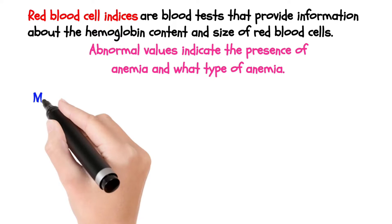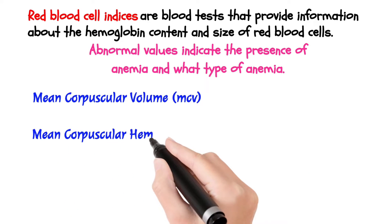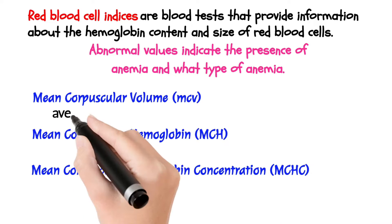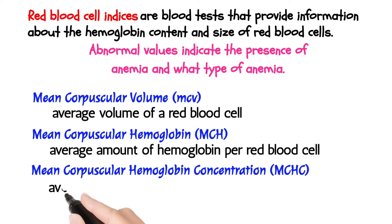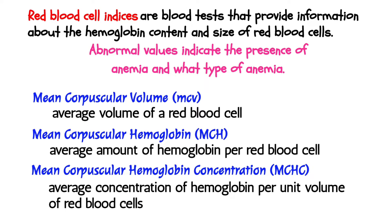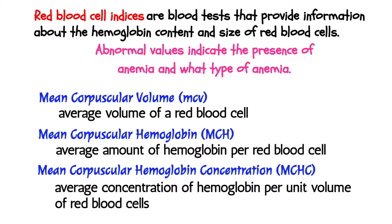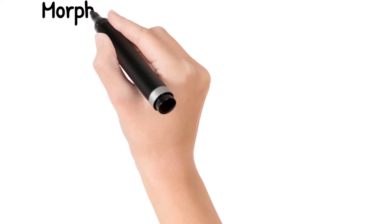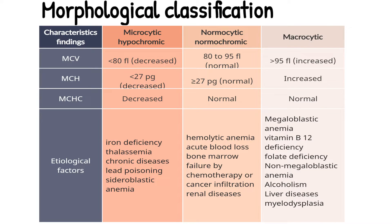There are three types of indices: mean corpuscular volume (MCV), mean corpuscular hemoglobin (MCH), and mean corpuscular hemoglobin concentration (MCHC). MCV is the average volume of a red blood cell. MCH is the average amount of hemoglobin per red blood cell, and MCHC is the average concentration of hemoglobin per unit volume of red blood cells. In microcytic hypochromic anemias, all MCV, MCH, and MCHC values are decreased. This type of anemia is caused by iron deficiency, thalassemia, chronic diseases, lead poisoning, and sideroblastic anemia.